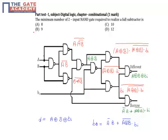So the correct option for this is option B that is 9. We can see over here all the intermediate levels are marked. Using this we can say that in all there are 9 two input NAND gates required to realize a full subtractor.